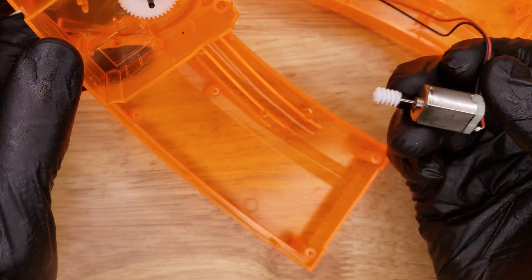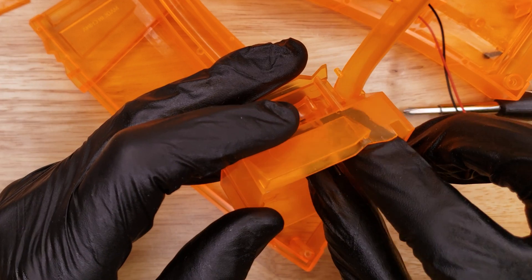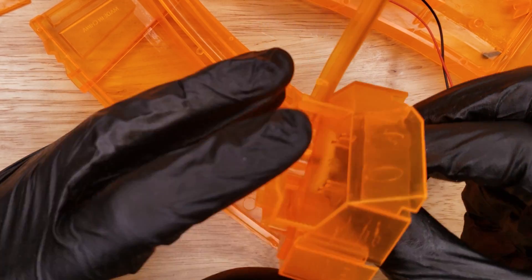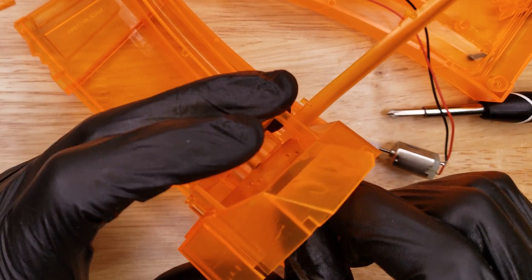This motor just falls out. This gear seems to be kind of stuck in place there. So this shaft is coated black, presumably for corrosion prevention.